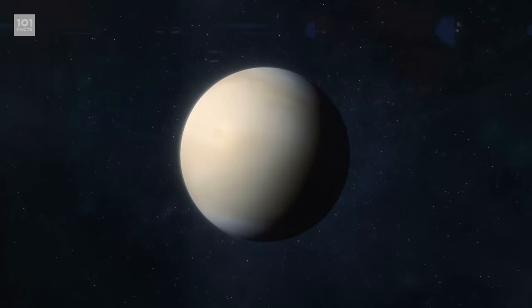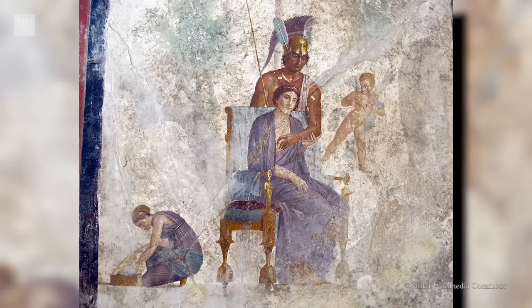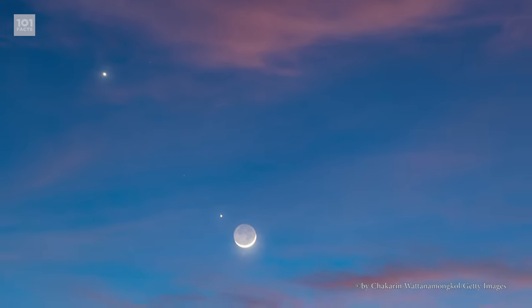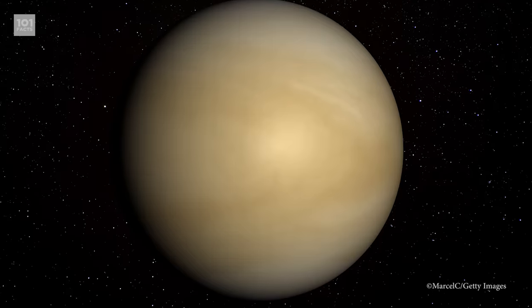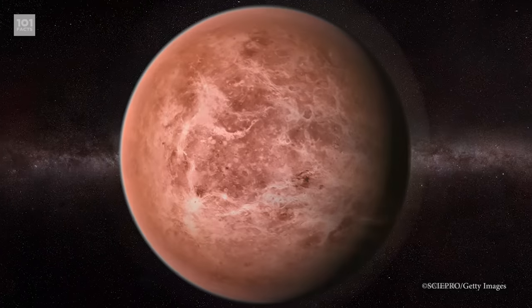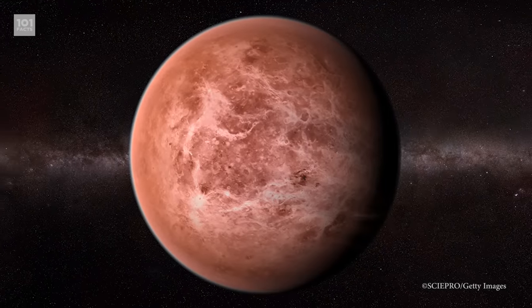Speaking of Venus, it's named after the Roman goddess of love and beauty, and is the brightest natural object in the night sky on Earth, apart from our moon. It's so bright that on rare occasions it can even be visible to the naked eye in broad daylight. Have a look now, see if you can see it.